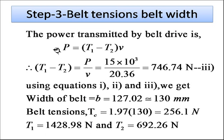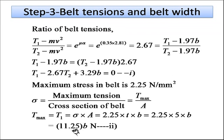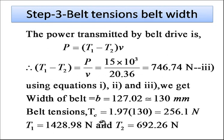With b = 130 mm: centrifugal tension Tc = 1.97 × 130 = 256.1 N. Therefore T1 = 1428.98 N and T2 = 692.26 N. To verify the design, the induced stress = T1 / (b × t) = 1428.98 / (130 × 5) = 1428.98 / 650 = 2.19 N/mm².